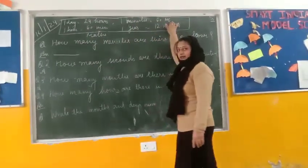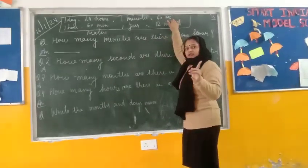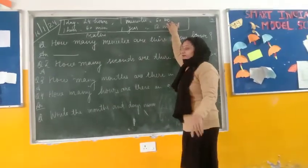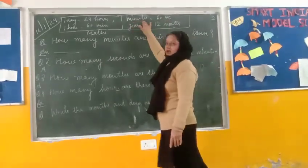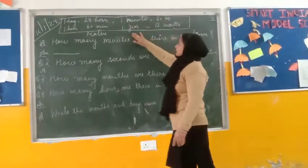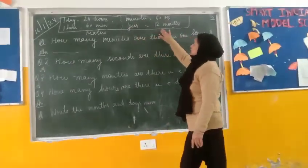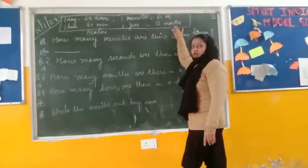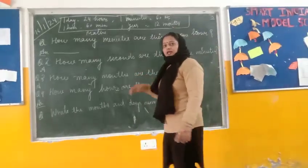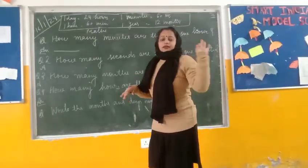One minute is equal to 60 seconds — 60 seconds makes one minute. And one year is equal to 12 months — 12 months makes one year.